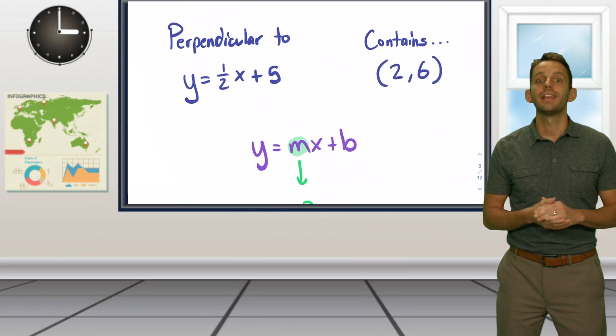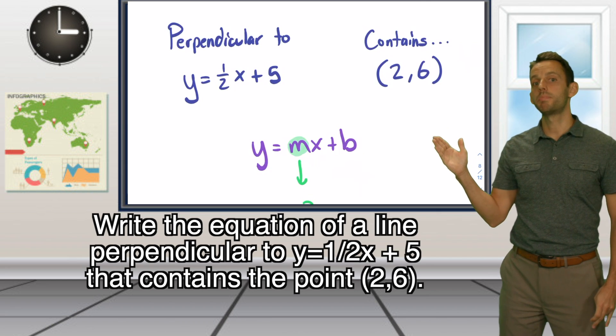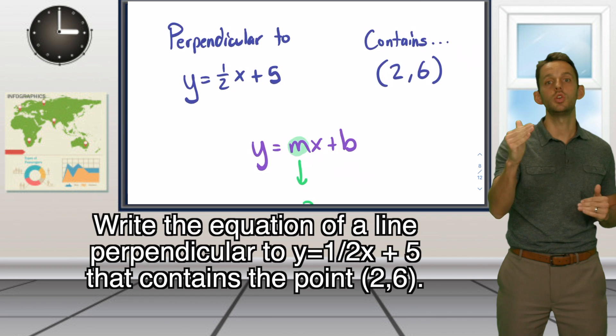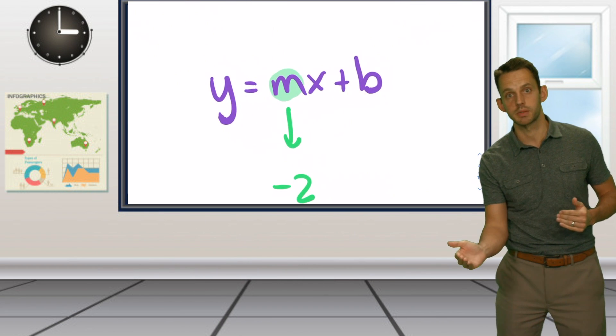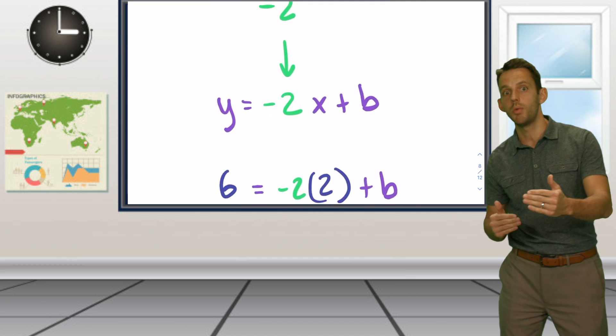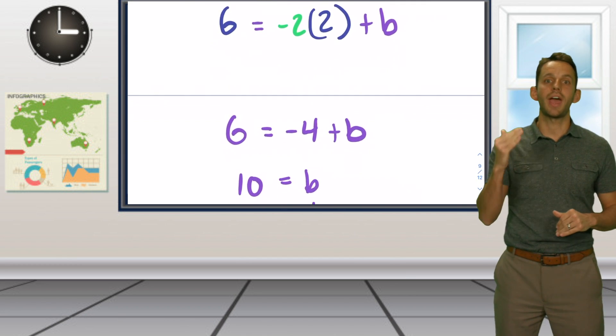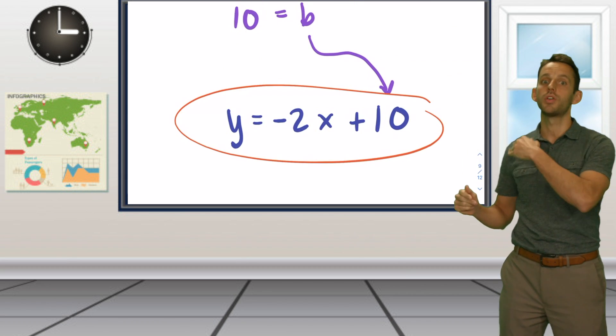For example, let's take this problem. Write the equation of a line perpendicular to y equals one half x plus five that contains the point two comma six. In slope-intercept form, we have to start with y equals mx plus b, then input our perpendicular slope, and then also our x and y from the point. Once we do that, we have the y-intercept, which we have to replug into y equals mx plus b with our new slope.